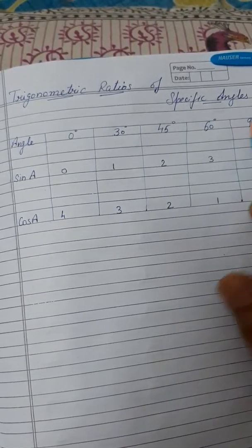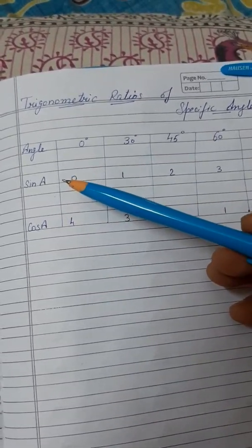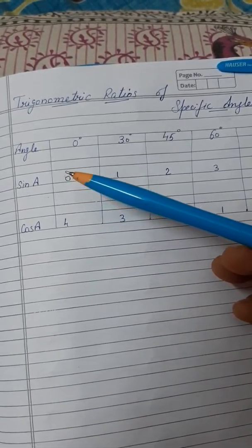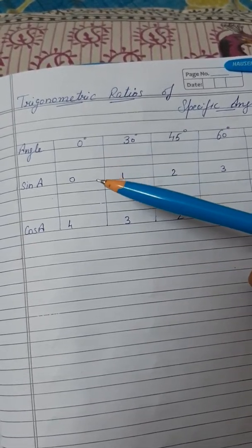How we find out these angles for sine and cosine. Then we can easily find out for tangent, cotangent, cosecant, secant. So let us start.